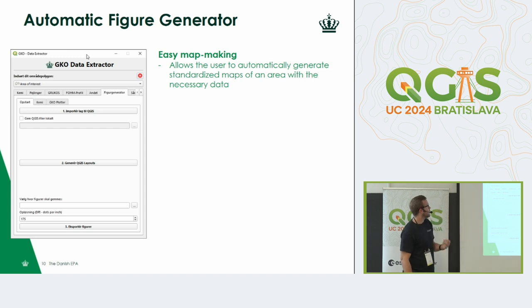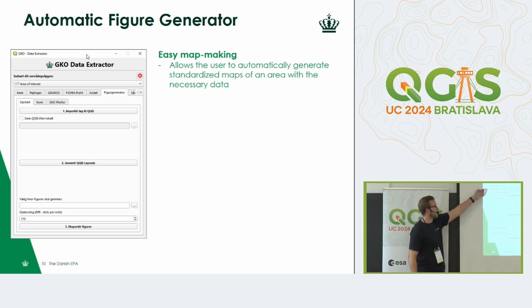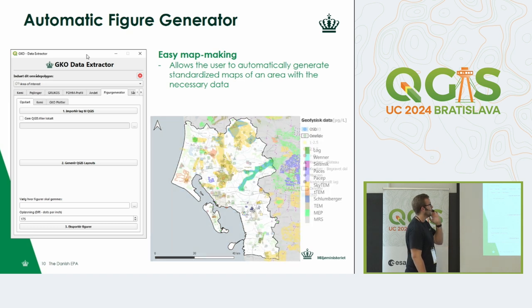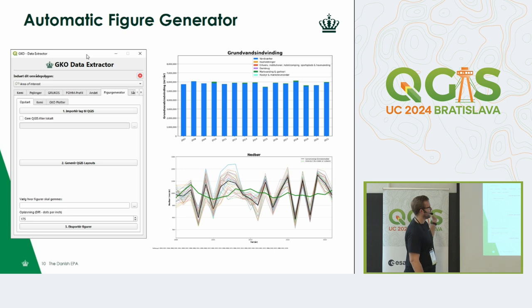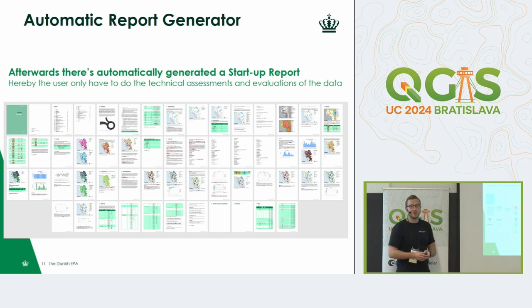The next example is our automatic figure generator, which allows the user to automatically generate all the standardized maps and figures that we use. When we start a mapping project, we produce a very long report with 40 maps — it's excessive and takes around 100 man-hours. Why not automate it? You import your layers, choose to save them locally if you'd like, generate your layouts, and export your figures. You get all 40 figures, which are essentially standardized. When that's done, it automatically generates a Word report. Everything people had to do manually before — now they can just focus on the technical assessments, looking at the data, doing the evaluations: the actual job.